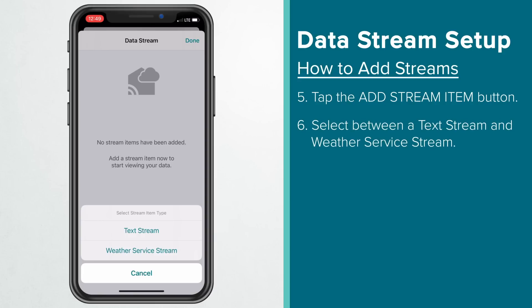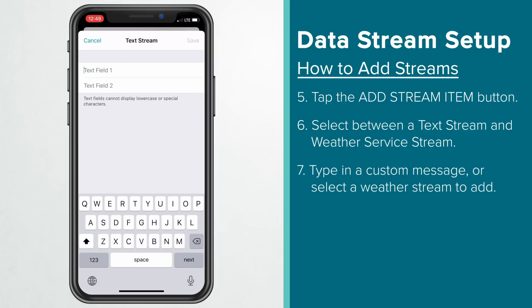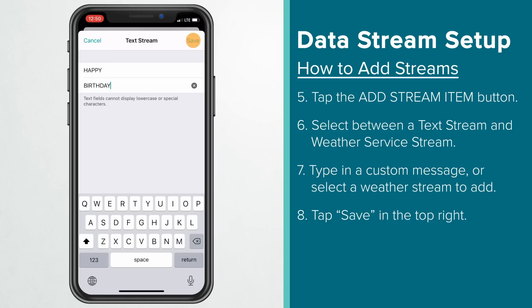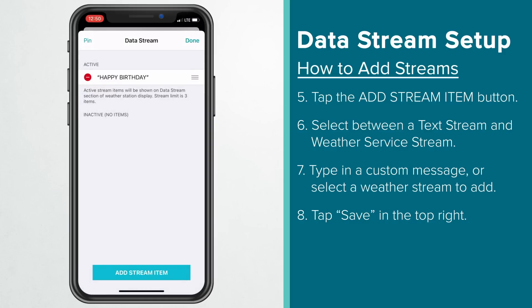Select between a text stream or a weather service stream. Let's add a text stream first. This will bring up a new page with two text fields for us to enter in our custom message. In most cases, these will be limited to about 10 all caps characters per field, including spaces, and will not allow for any special characters. For example, if your special someone has a birthday coming up, you can add this stream to surprise them with your custom message. Simply type what you'd like each line to say, and tap Save in the upper right. You can now see our Happy Birthday text stream listed in our active section.